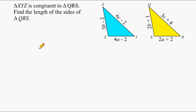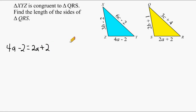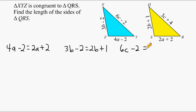We're going to write some equations that represent this reality. We can say that 4A minus 2 is equal to 2A plus 2. And we can say that 3B minus 2 is equal to 2B plus 1. And we can say that the line segment represented by 6C minus 2 is equal to the line segment represented by the expression 3C plus 4. We need to figure out the values of A, B, and C in each equation.